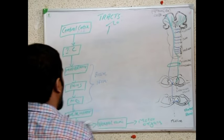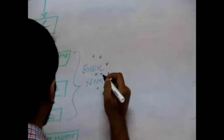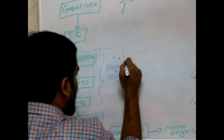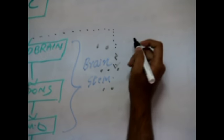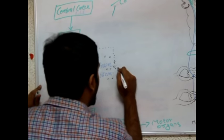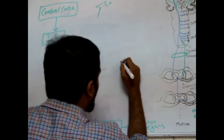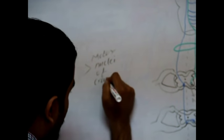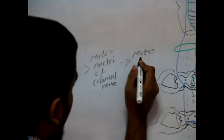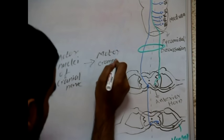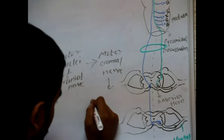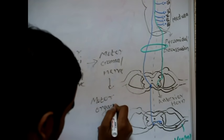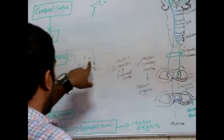There are many nuclei situated in the brainstem — that is, the cranial nerve nuclei. Instead of going all the way to the spinal cord, this path reaches the brainstem and follows the corticobulbar tract. From the brainstem, it synapses with the motor nuclei, and the cranial nerves take the messages to the motor organs. This is the pathway followed by the corticobulbar, or corticonuclear, tract. The difference is: corticospinal goes directly to the spinal cord, while corticobulbar goes from the cortex to the brainstem, synapses with cranial nerve motor nuclei, and those cranial nerves carry the messages to the motor organs.